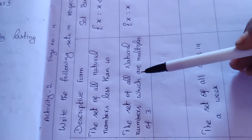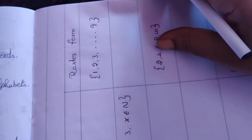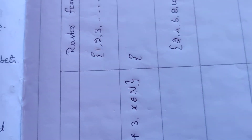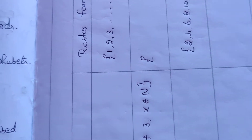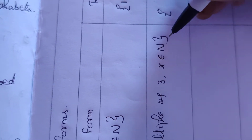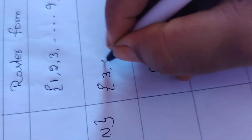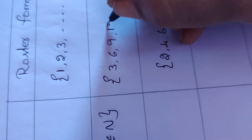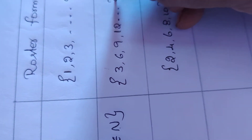Since x is a multiple of 3 and x belongs to natural numbers: 3×1=3, 3×2=6, 3×3=9, 3×4=12. So the roster form lists: 3, 6, 9, 12, and so on. Now we can stop there.